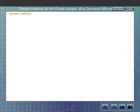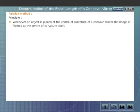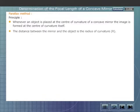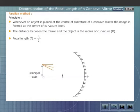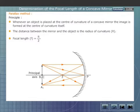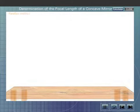Parallax method. The parallax method is based on the fact that whenever an object is placed at the center of curvature of the mirror, the image is formed at the center of curvature itself. The distance between the mirror and the object is the radius of curvature of the mirror. Half of the radius of curvature gives the focal length. The ray diagram shown here gives the principle of the parallax method.